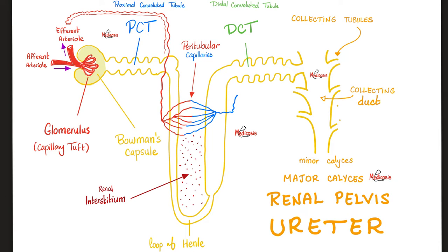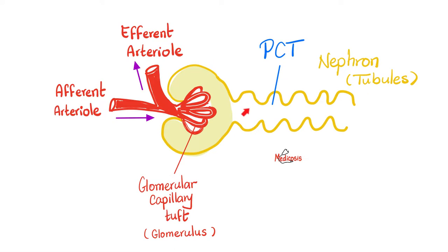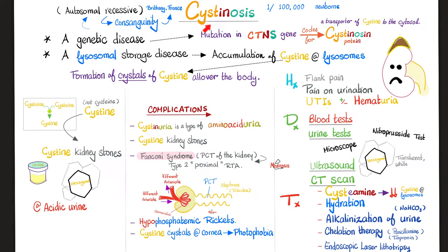Where's the problem in cystinosis? Accumulation of cystine throughout the body, and this can lead to a defect in the proximal convoluted tubule. The proximal convoluted tubule is the most active part of the kidney — it's responsible for reabsorption of two-thirds of almost everything: sodium, water, all the amino acids, all the glucose, etc.